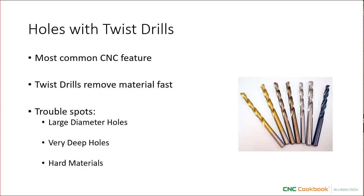The most common feature of all CNC work is a hole, and the most common way to make a hole is with a twist drill. Twist drills remove material very quickly — in fact, they can remove material more quickly than almost any other kind of CNC cutter. They only do a specialized kind of material removal, making a cylindrical hole, but they're very good at it. The trouble spots to watch for are problems with large diameter holes, very deep holes, and harder materials. For beginners, at some point you'll want to invest in carbide twist drills when working with hard materials like titanium — they're more expensive, so probably not a place for the beginner.